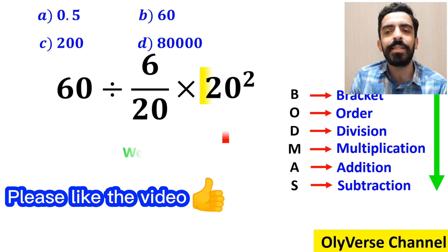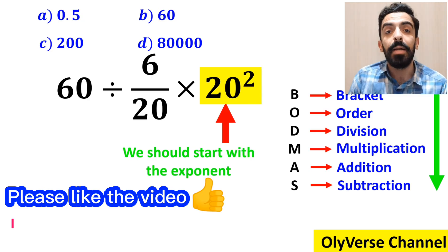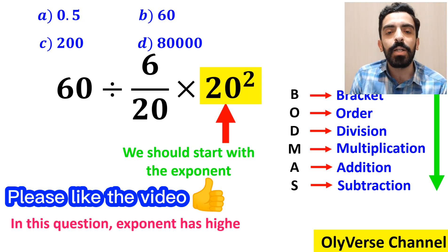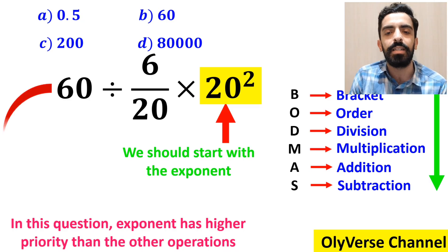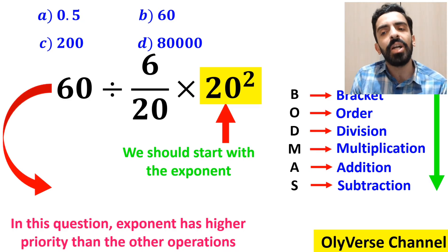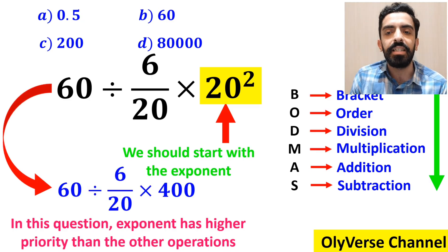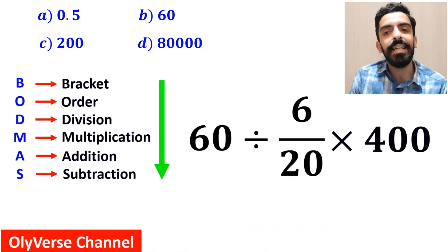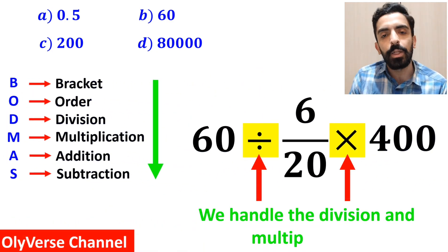According to the BODMAS rule we should start with the exponent, because in this expression exponent has a higher priority than the other operations. So instead of the original expression we can write 60 divided by 6 over 20 multiplied by 400. The next step is to handle the division and multiplication.